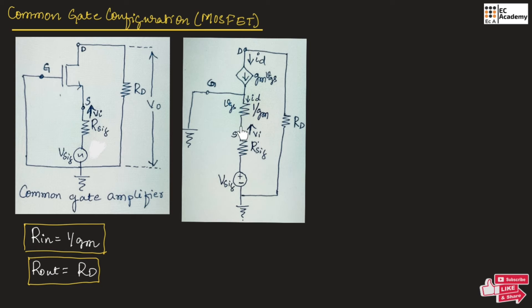Since this is the input side, the input voltage can be written as minus id into 1 by gm.